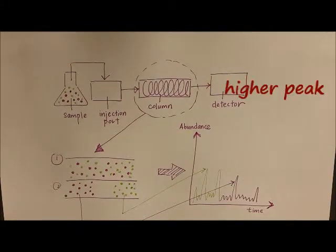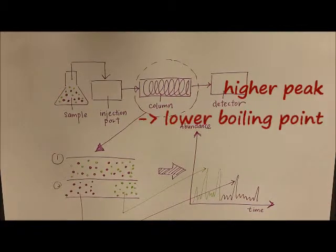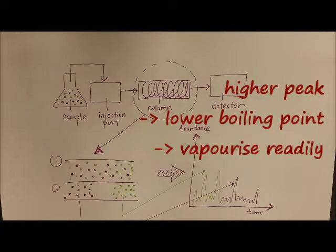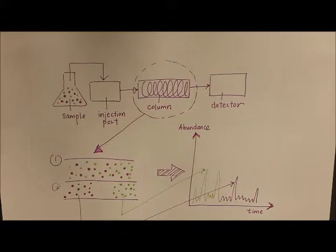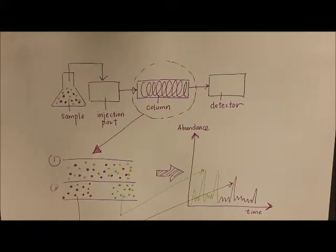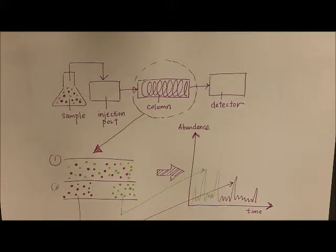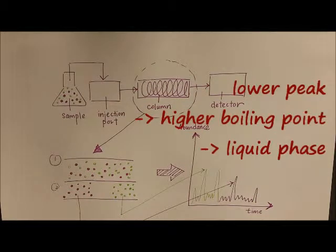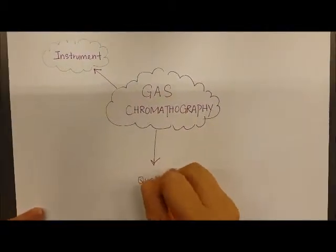A component that has a higher peak normally has a lower boiling point and thus vaporizes more readily, whereas the compound with the lower peak has a higher boiling point and is more favorable to the liquid phase.